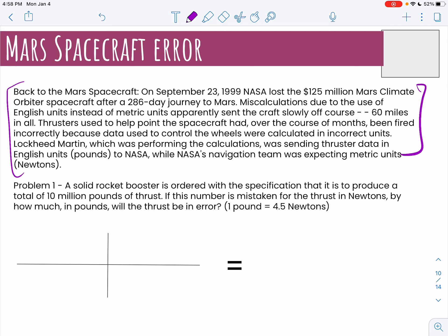A solid rocket booster is ordered with a specification that is to produce a total of 10 million pounds of thrust. If this number is mistaken for the thrust in newtons, by how much in pounds will the thrust be in error?